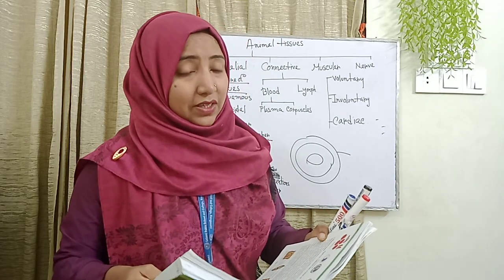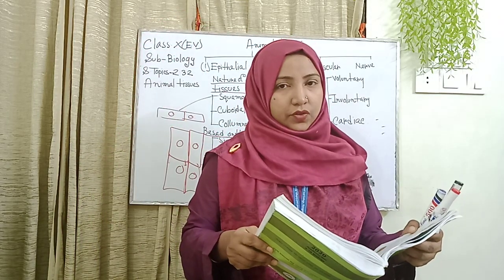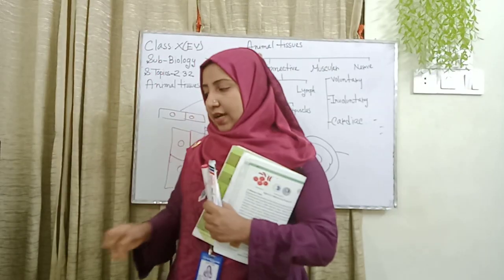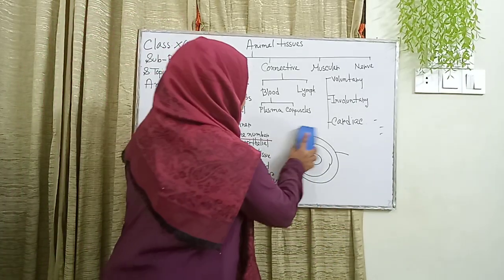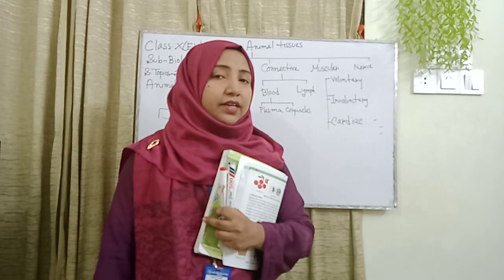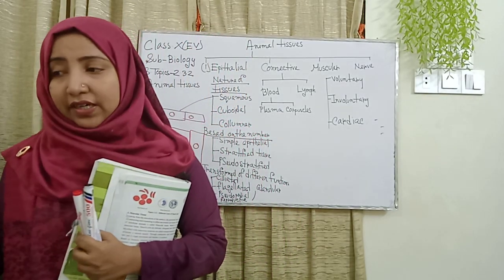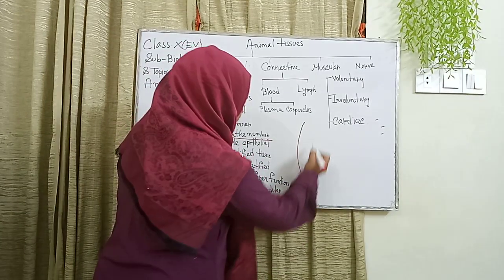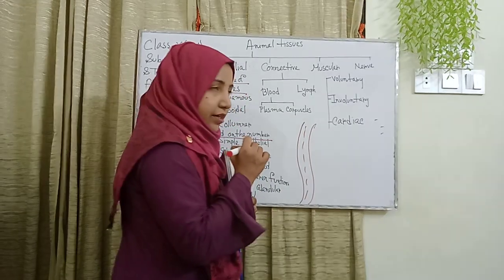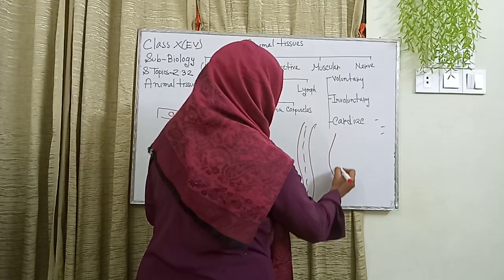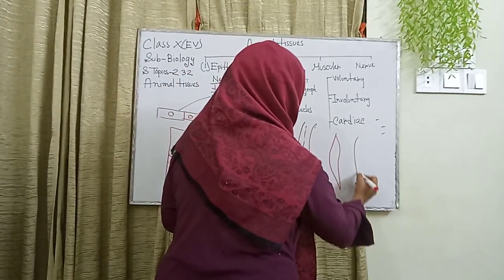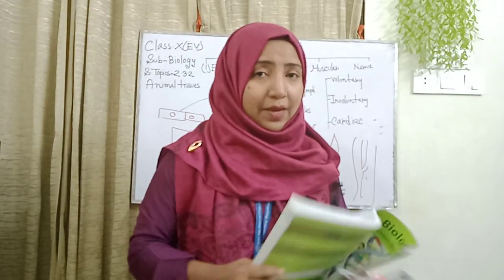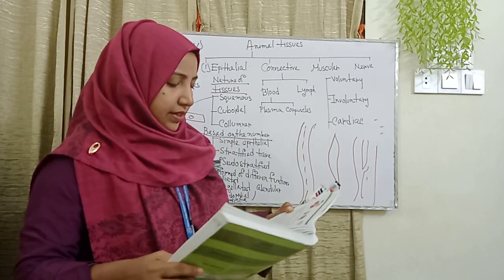In muscular tissue, the matrix is nearly absent. Muscle cells are delicate, elongated, and fiber-like. There are three types of muscular tissue. I will draw all three. The first is voluntary muscular tissue, the second is involuntary muscular tissue, and the third is cardiac muscular tissue.